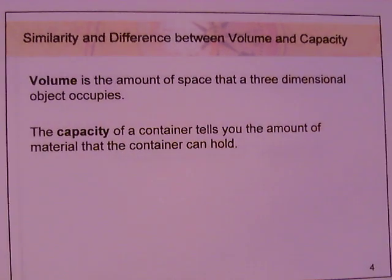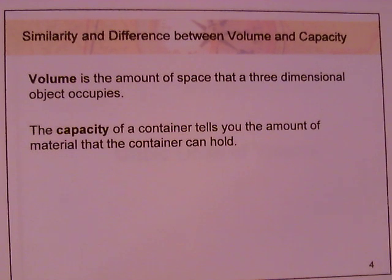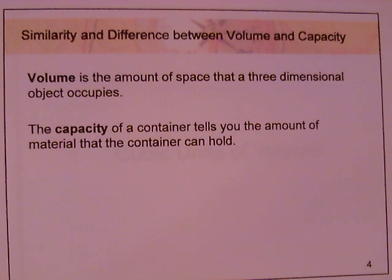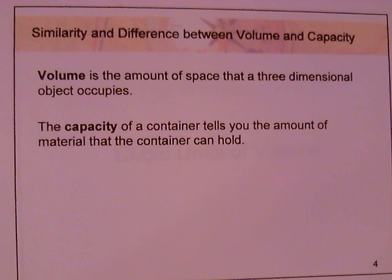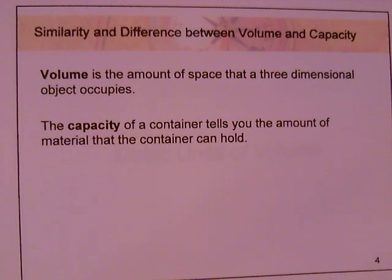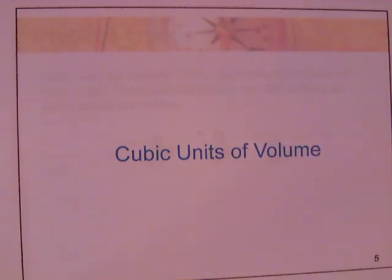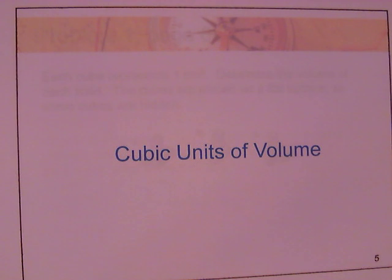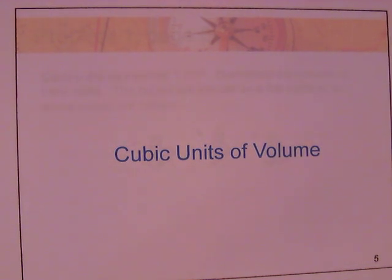Volume is the amount of space that a three-dimensional object occupies — so for a cylinder or a cone, we look at that space. Capacity of a container tells you the amount of material that a container holds. When dealing with volume we use cubic units, whereas area deals with square units.